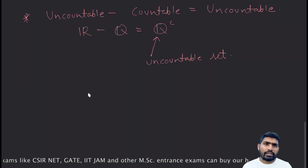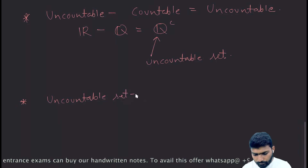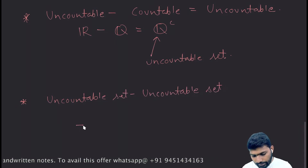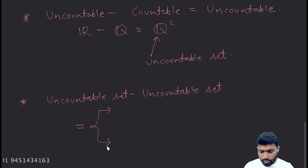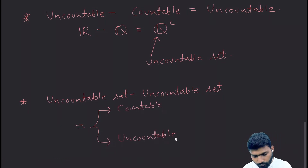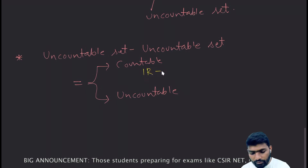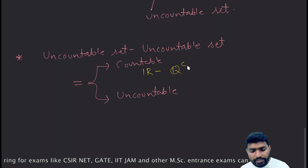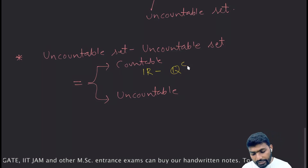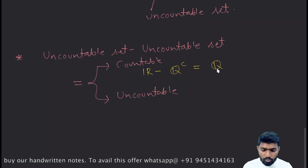The second useful result is: uncountable set minus uncountable set can be either countable or uncountable. For the first case — when the result is countable — consider: the set of real numbers (uncountable) minus the set of irrational numbers (uncountable) gives us the set of rational numbers, which is a countable set.